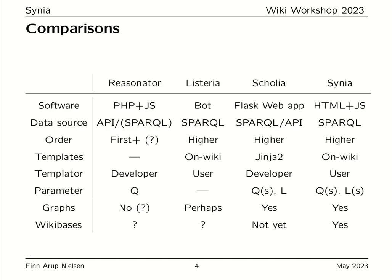To compare against other approaches to displaying information from Wikidata: we have Resinator, Listeria, Scolia, and now Cynia. Resinator uses PHP and JavaScript; Listeria is a bot operating on wikis; Scolia is Python and Flask, a web application. Cynia is a simple serverless HTML and JavaScript application that operates on SPARQL so that higher-order information can be aggregated from various pages of Wikidata.